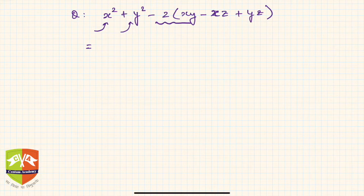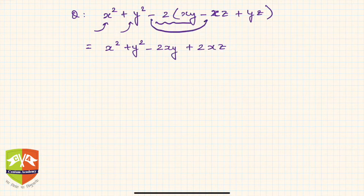So it is x² + y² - 2xy, plus—be careful with the sign—so minus into minus gives plus 2xz, and then minus 2yz.